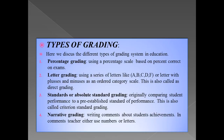Then, types of grading. Here we discuss the different types of grading system in education. The first type is percentage grading. The second type is letter grading — in letter grading, the teacher uses a series of letters like A, B, C, D, F, and the teacher also uses plus or minus order category scale. If a student's work is outstanding, the teacher can inform them of their achievement through A+ or A1. This grading is also called direct grading.